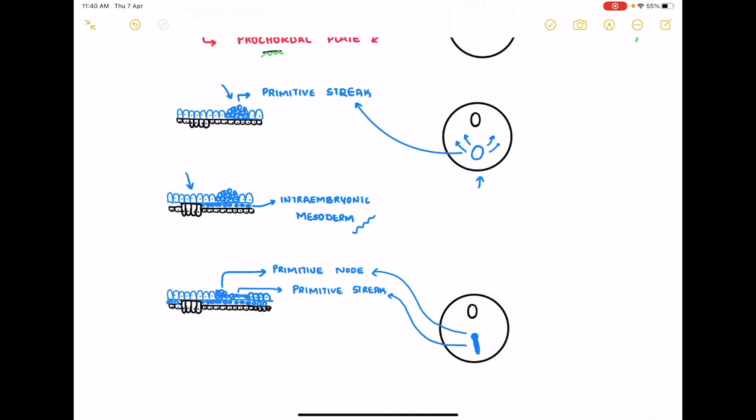As the embryo becomes bigger the primitive streak becomes longer and the cranial tip or the cranial end of the primitive streak becomes like a node called the primitive node.